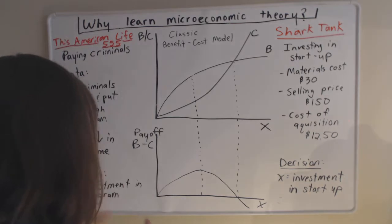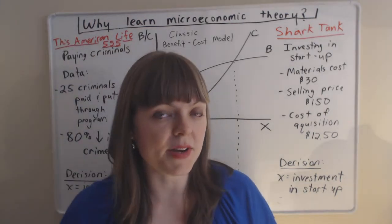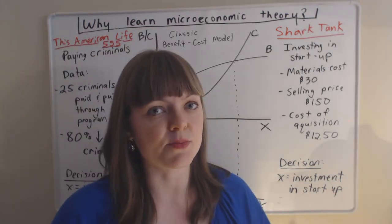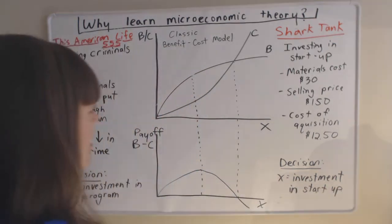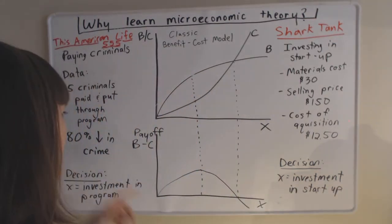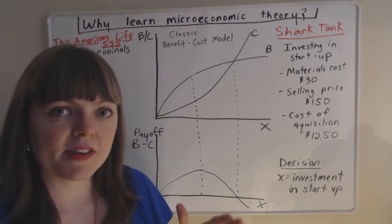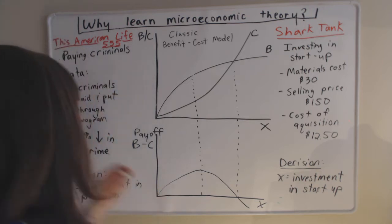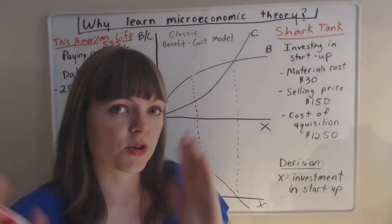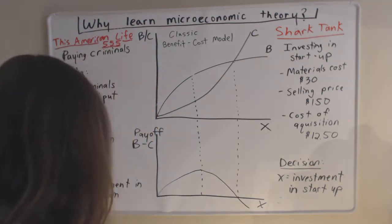So the big question is, how much should the government invest in expanding this program for Richmond? And if we think about this, we're given some data. What is the benefit of the program? The benefit is the reduction in crime. That's the 80% reduction in crime. The cost, and that's our data, is the cost for 25 criminals.